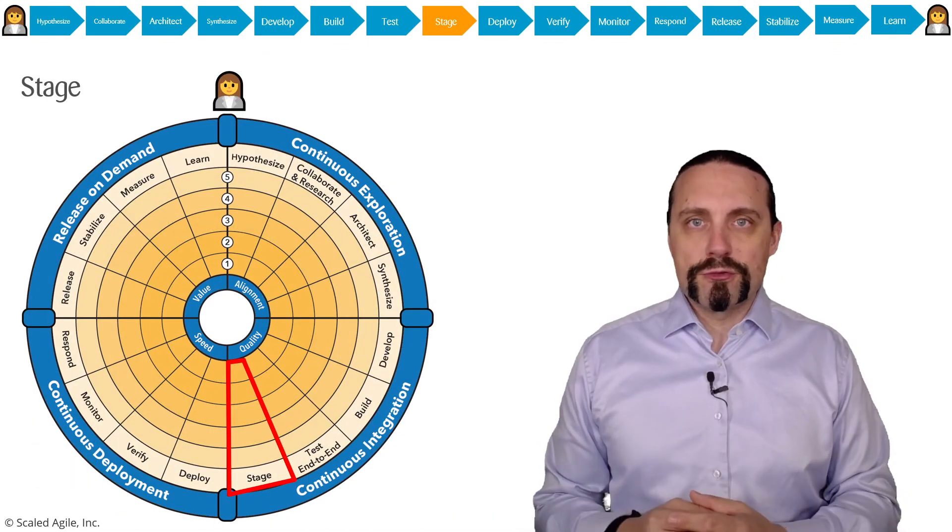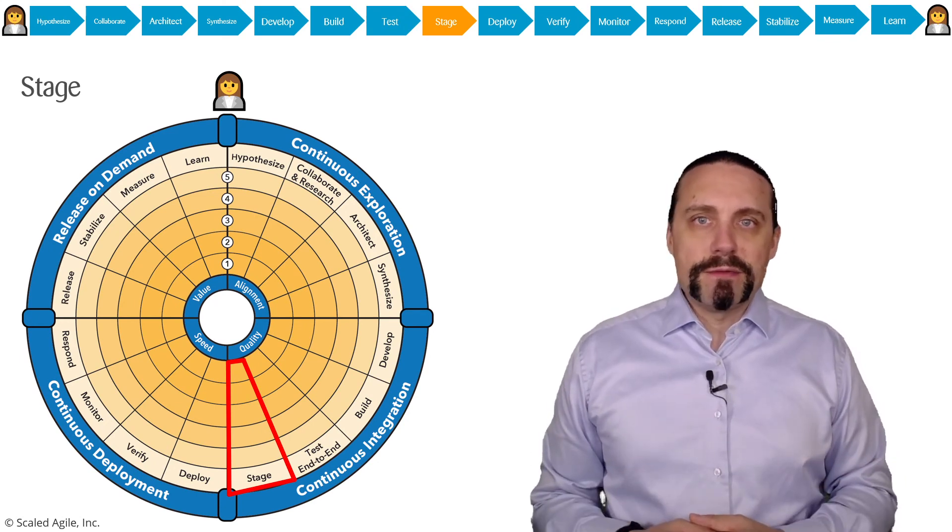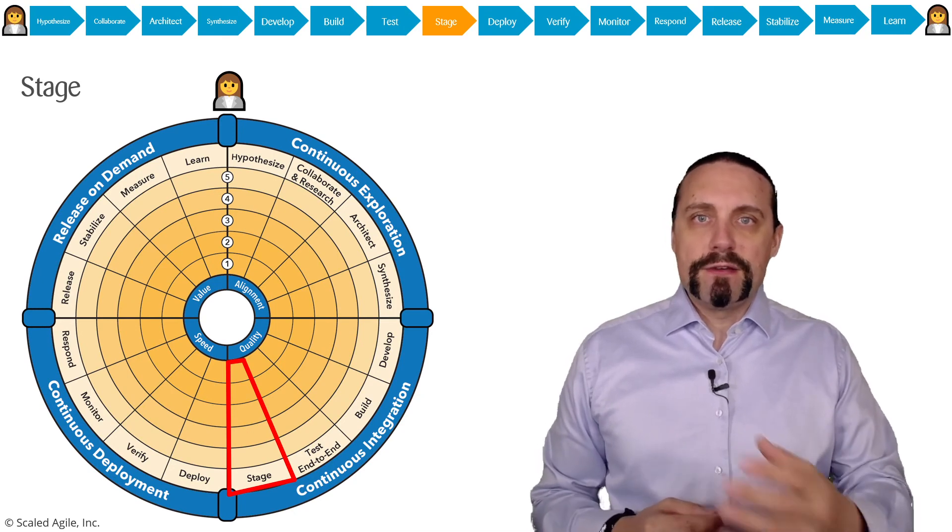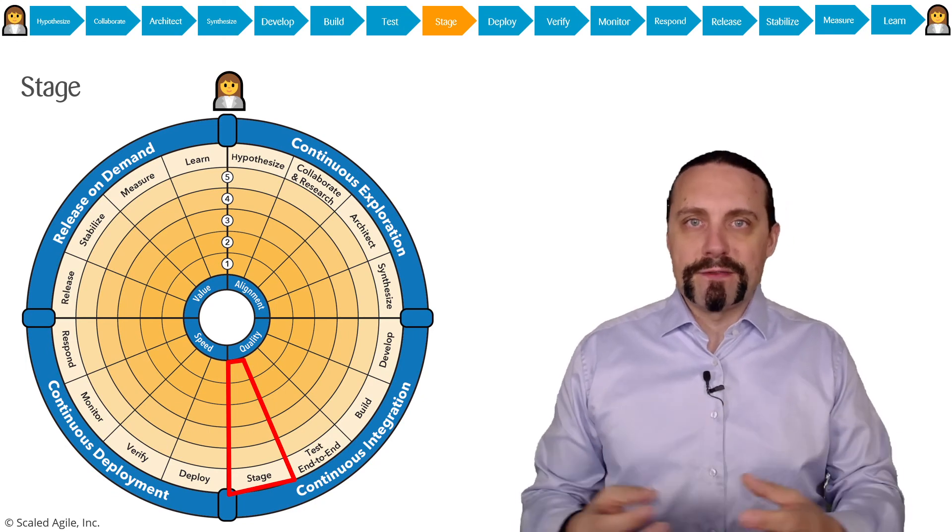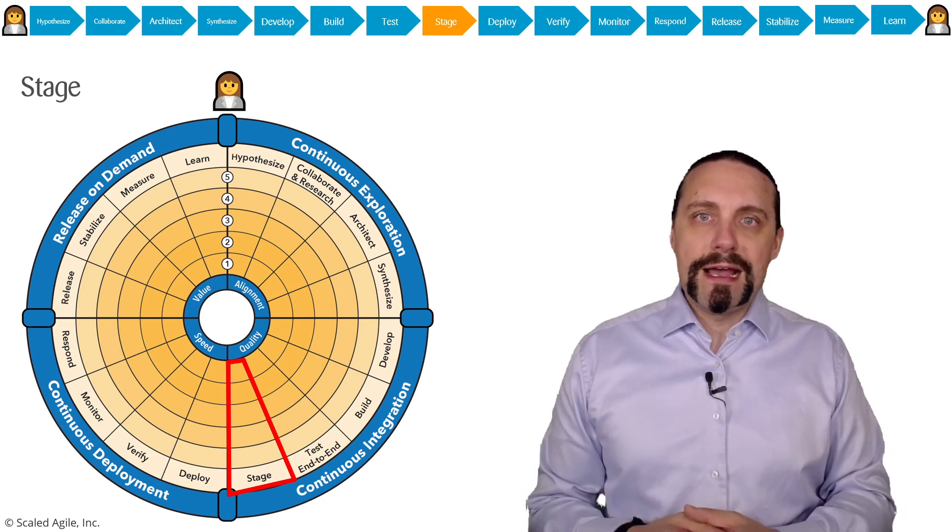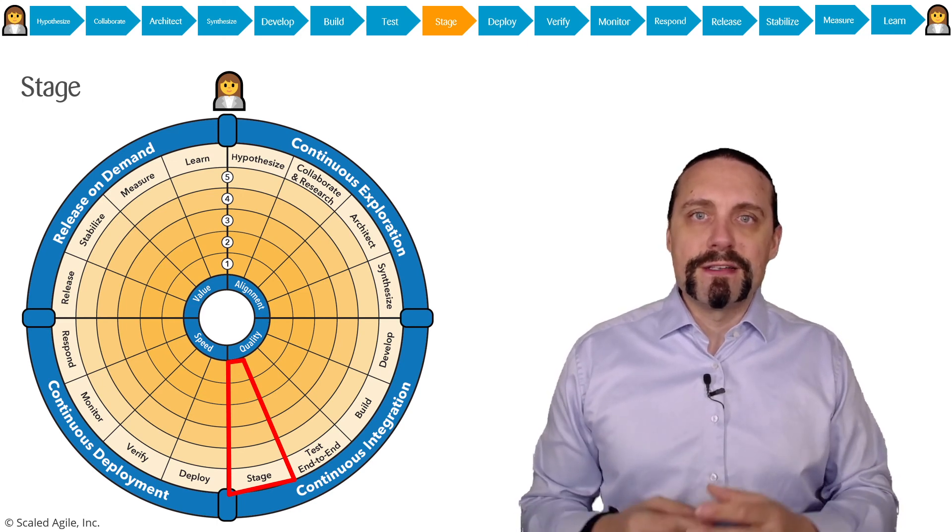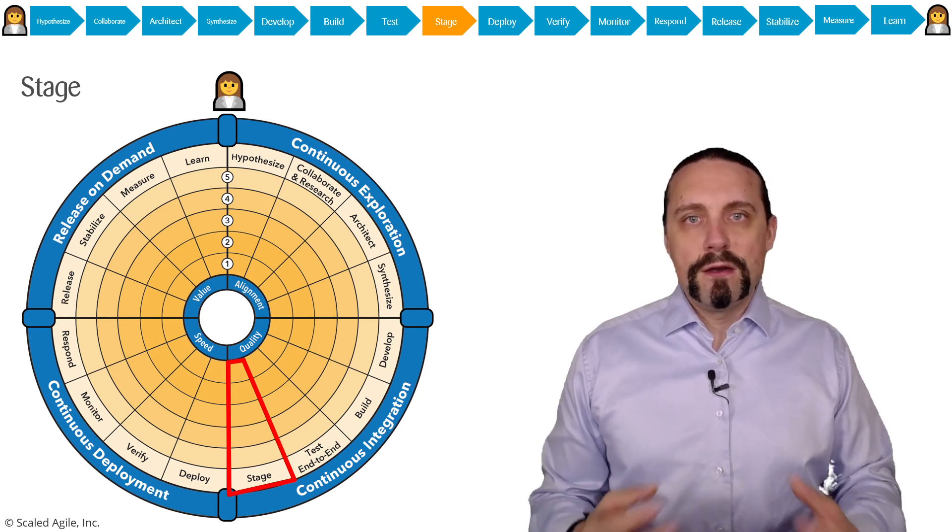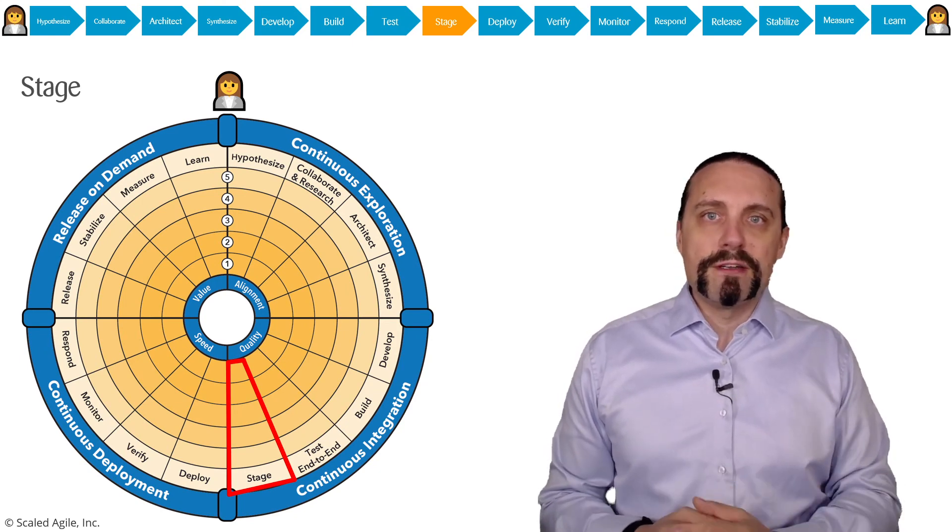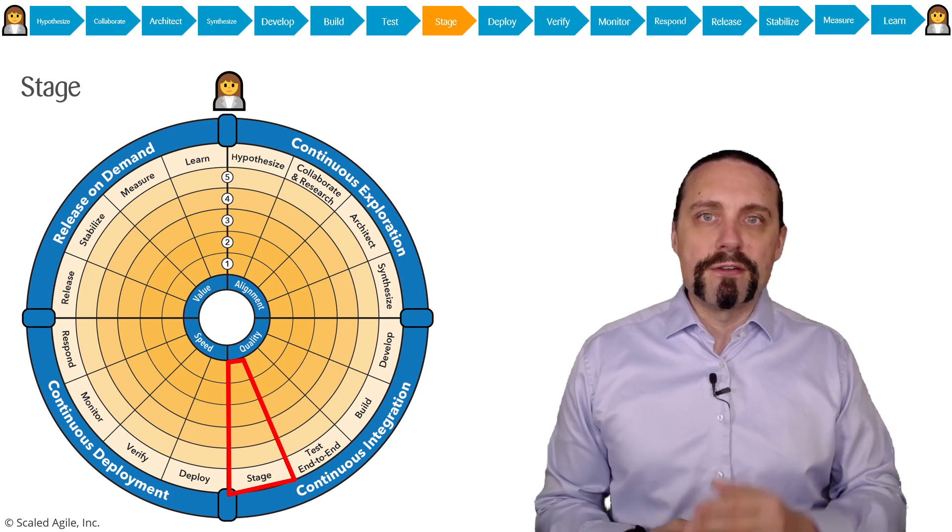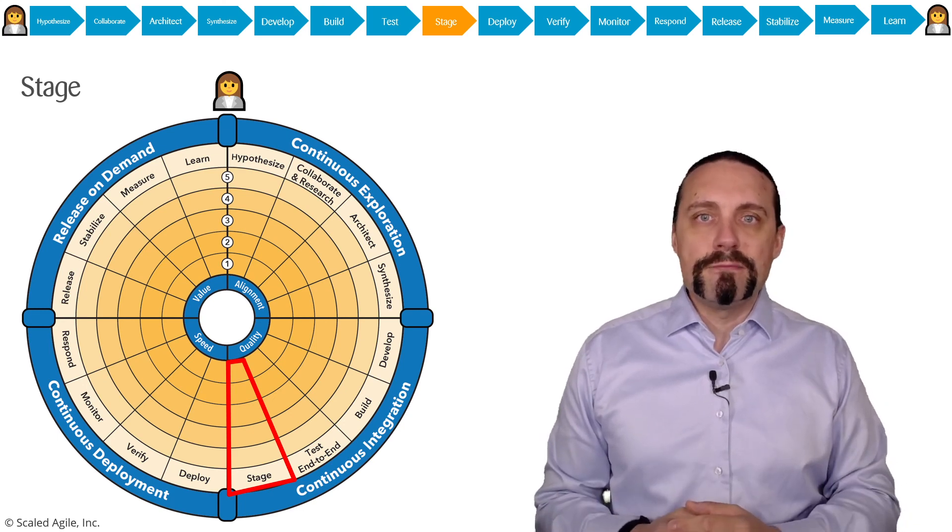The stage step is a crucial step to get the final approval from our stakeholders. In the stage environment we are doing our system demos and we also do the user acceptance testing there and with that we also have an environment for doing the education of people and a demo environment to show the system to our stakeholders so that they can give us the final approval to go into production. Of course in the best case everything is automated so we automatically deploy into the stage environment and we have automated tests which are executed and our package is then automatically deployed into production.